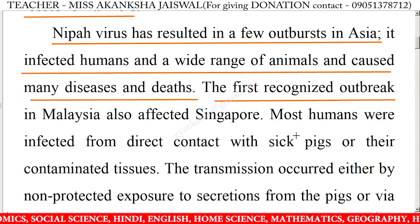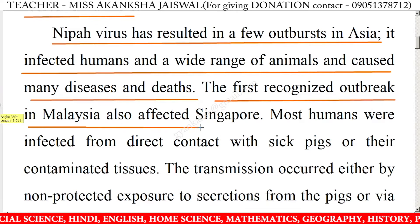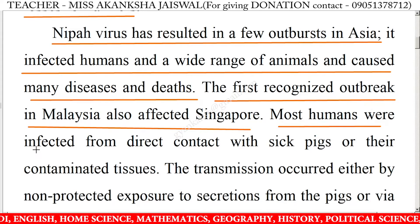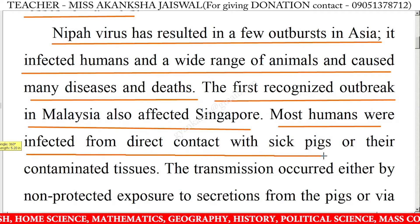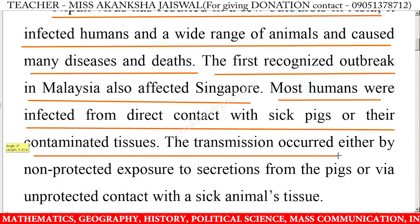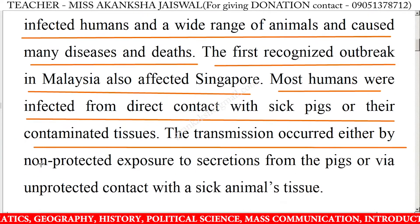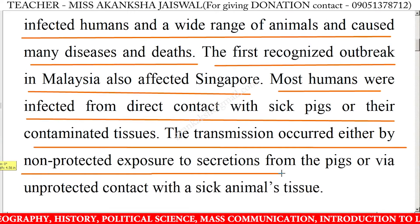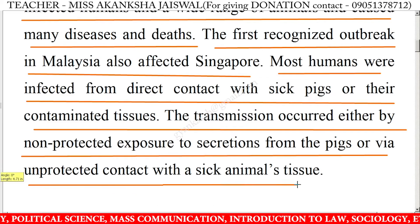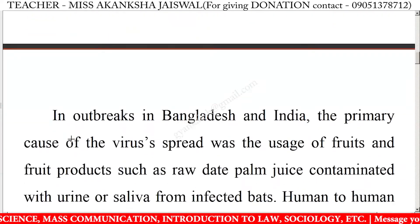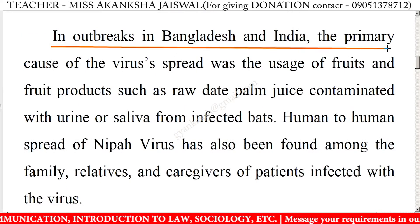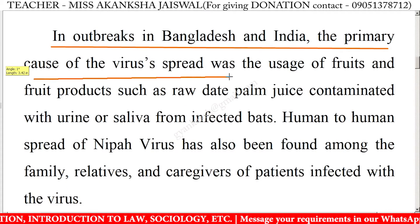The first recognized outbreak in Malaysia also affected Singapore. Most humans were infected from direct contact with sick pigs or their contaminated tissues. The transmission occurred either by non-protected exposure to secretions from the pigs or via unprotected contact with a sick animal's tissue.